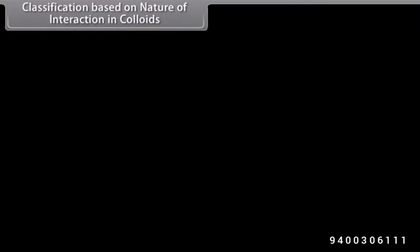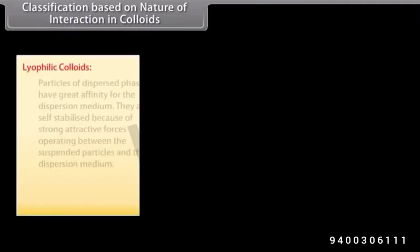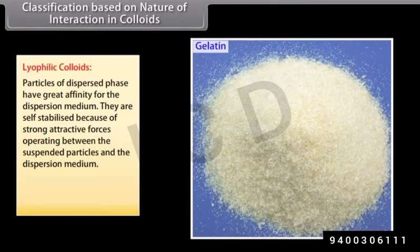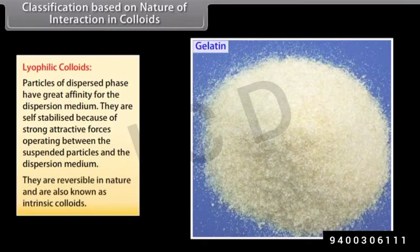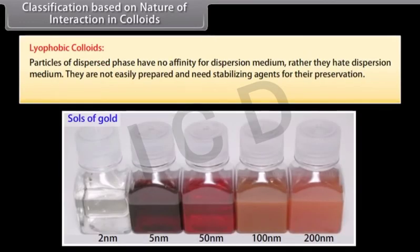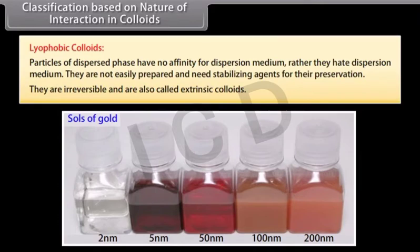On the basis of nature of interaction between dispersed phase and dispersion medium, colloids are divided into lyophilic and lyophobic colloids. Lyophilic colloids: particles of dispersed phase have great affinity for the dispersion medium; they are self-stabilized, reversible, and also known as intrinsic colloids. Examples: gums, starch, gelatin, and albumin. Lyophobic colloids: particles of dispersed phase have no affinity for the dispersion medium; they are not easily prepared and need stabilizing agents; they are irreversible, also called extrinsic colloids. Examples: sols of gold, silver, and ferric hydroxide.